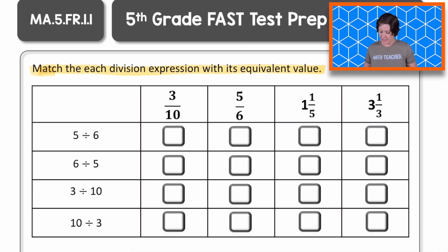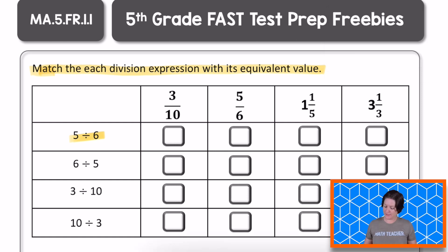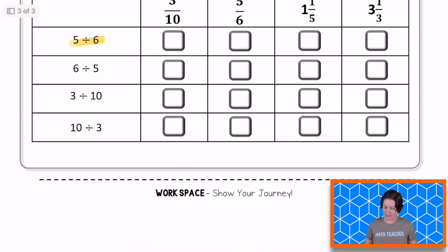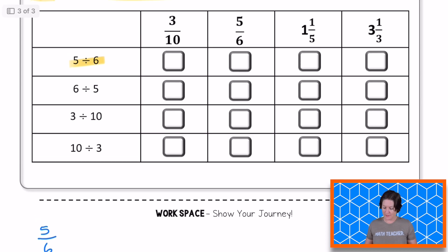So what we do is we have these expressions over here, and they're division expressions that we need to rewrite as a fraction. So let me go ahead and take off that first one, bring it down to where I can work it out on paper. So five divided by six is the same as five sixths. So because of that, I can go ahead and just mark, find five sixths. That was pretty simple, wasn't it?